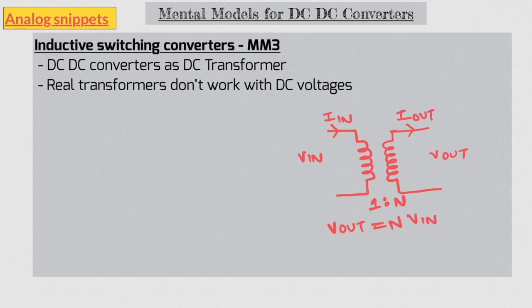For an ideal transformer, the input and output powers are same. So from this equation, the input and output currents are also related by the same factor n. Now a DC to DC converter also does many of the similar things. But on a DC voltage. So these relations are also valid for DC to DC converters. And it gets better.